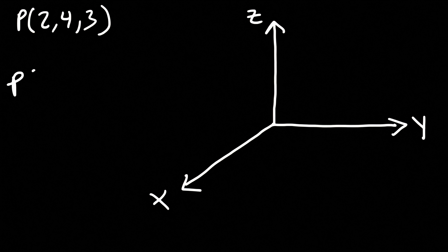The coordinates go in alphabetical order: x, y, z. So x is 2. Let's plot that on the x-axis — 2 is somewhere in this region.